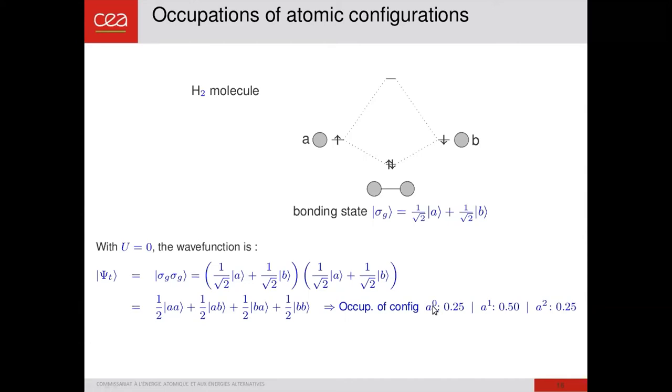So the occupation of configuration in the A atom corresponds to this value here, which are the square of the coefficients. For A zero, so zero electrons on A, you have this term which gives 0.25. For one electron, you have 0.5. And for two electrons, you have 0.25. If now you take into account the electronic interaction, and let's suppose that we have a very large interaction, this term disappears because it would correspond to infinite energy, because you have two electrons on a given site. And so at the end, you have only those two terms. And in this case, the occupation of configuration is simply this.